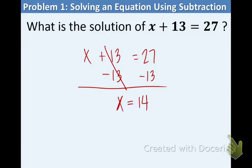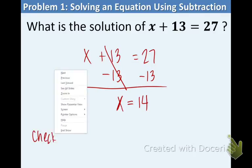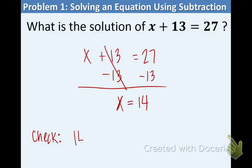I want to show you a quick check method — it's always wise to do this. Plug your answer in for the letter: substitute 14 for x. 14 plus 13 equals 27, and that's what we started with. So we're done.